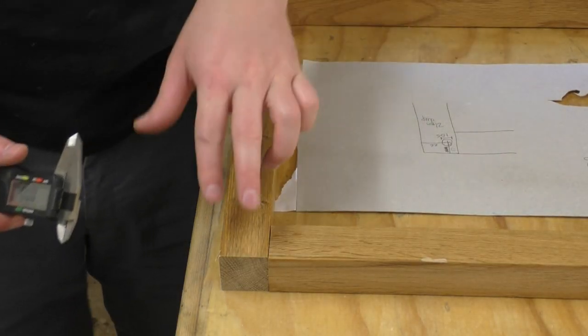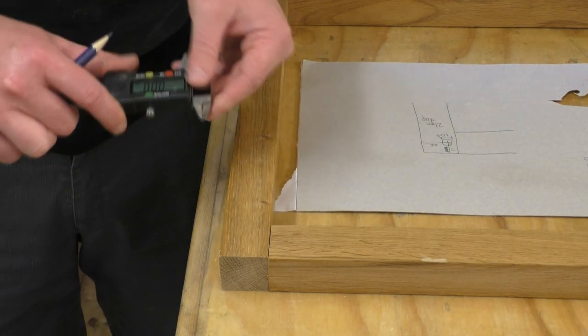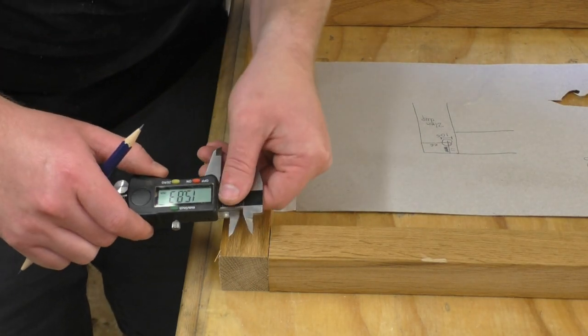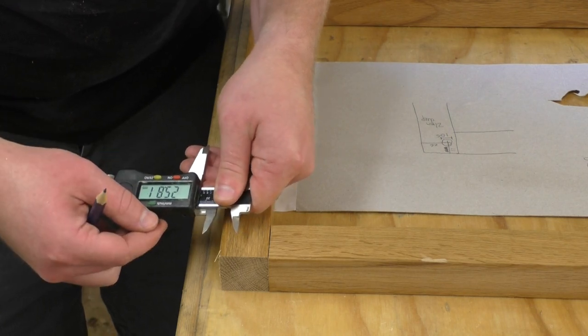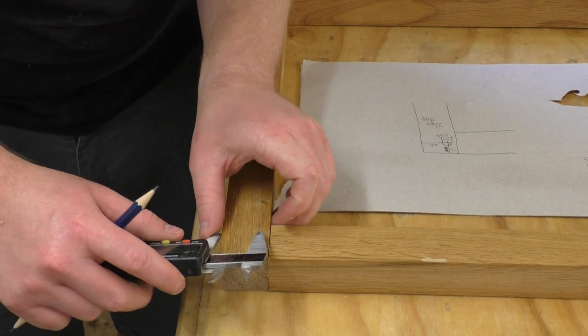And now I can use my diagram to mark up the exact position of the hole for the threaded insert. So I'll set my calipers to 26 millimeters and scribe a line.